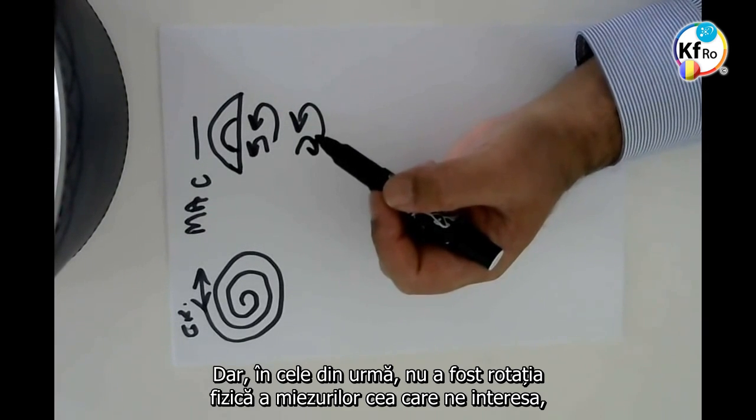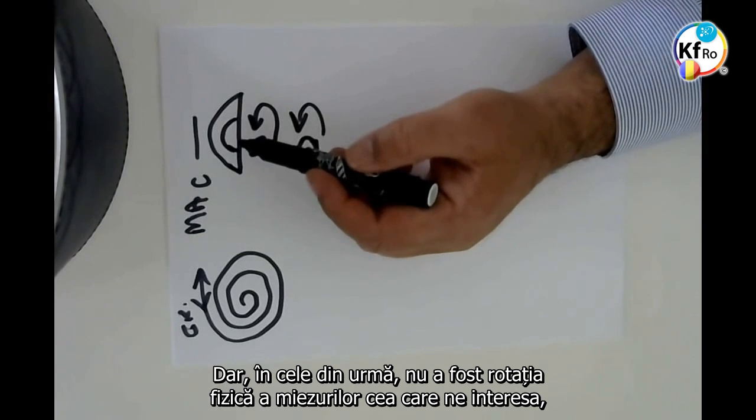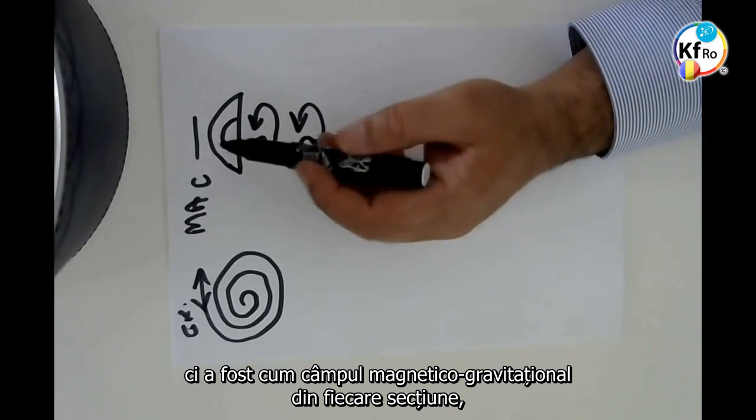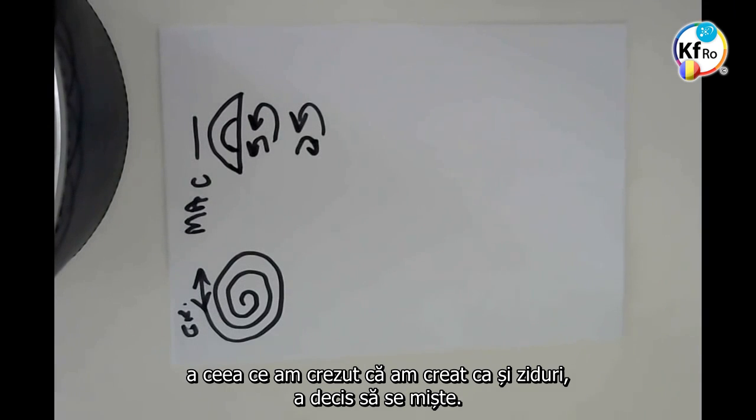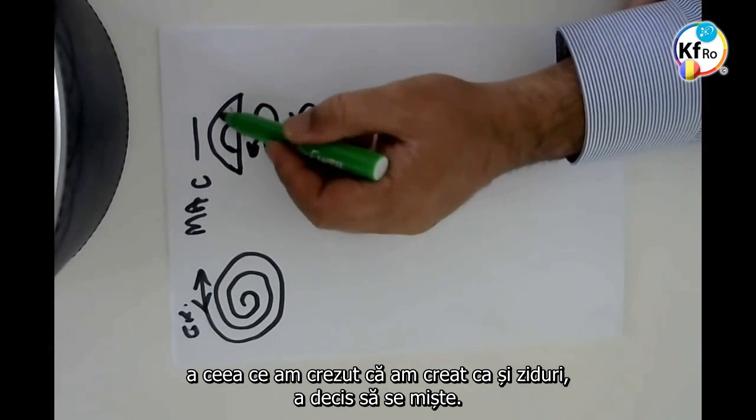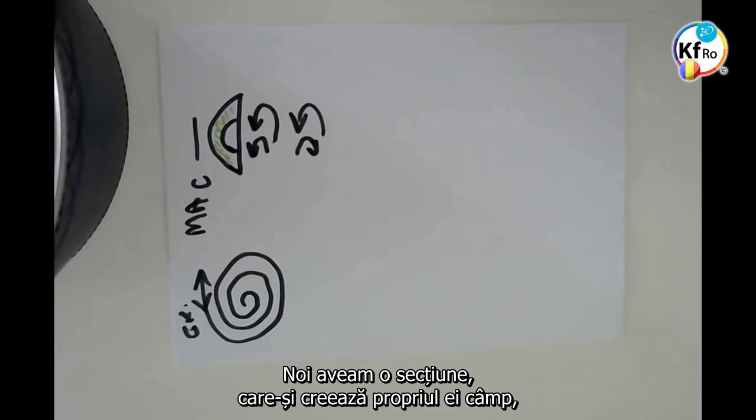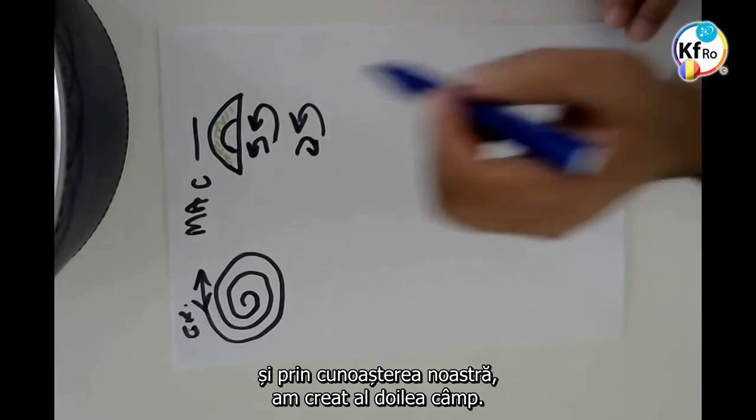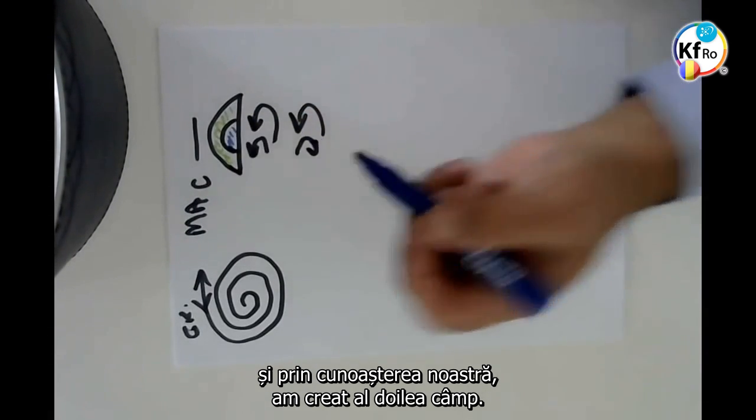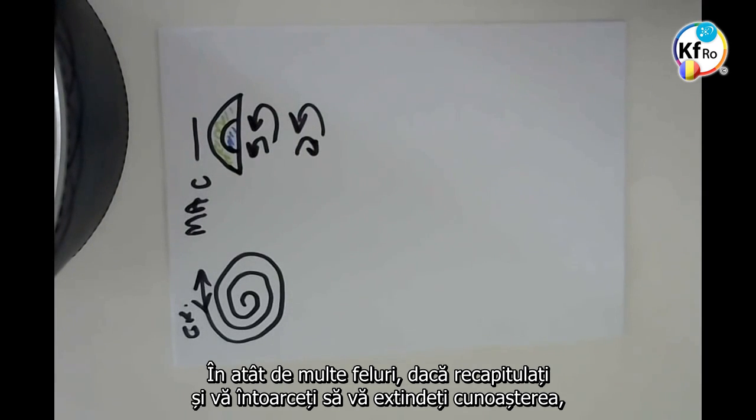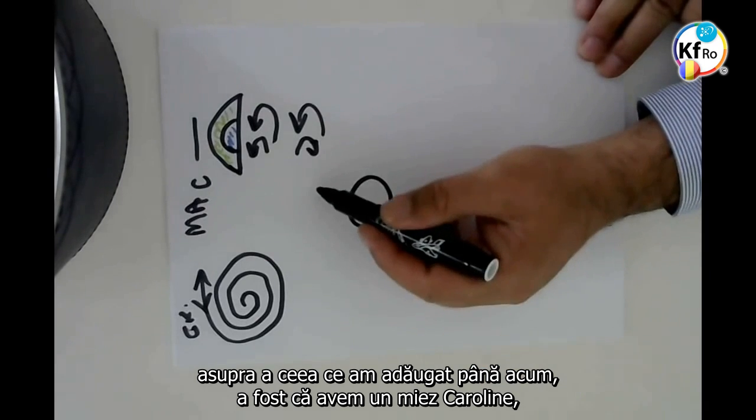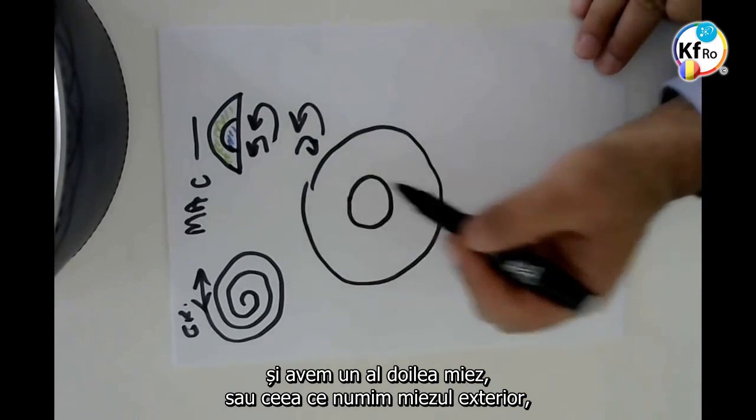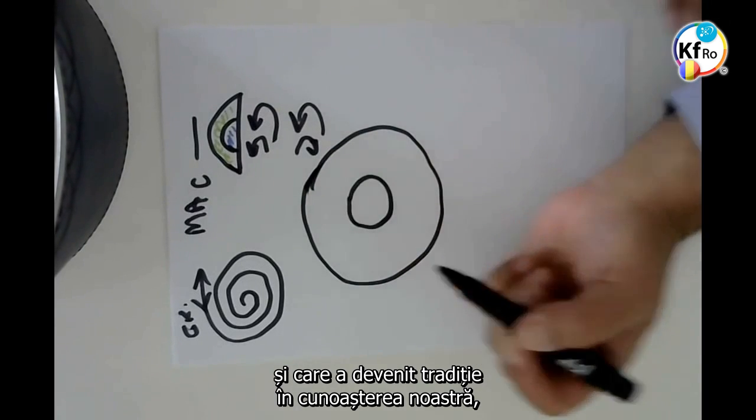But at the end, it wasn't the physical rotation of the cores which counted. It was how the Gravitational-Magnetic Field in each section, or what we thought that we created a wall, decided to move. We had one section which created its own field, and with our knowledge we created a second field.